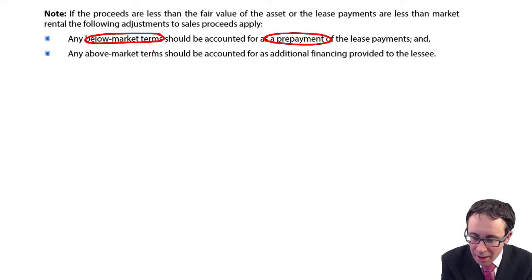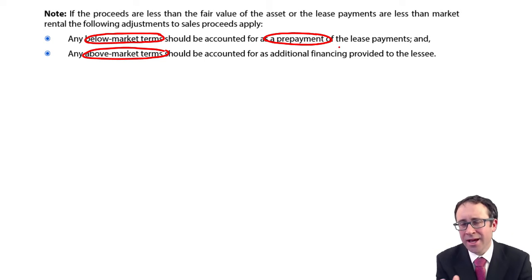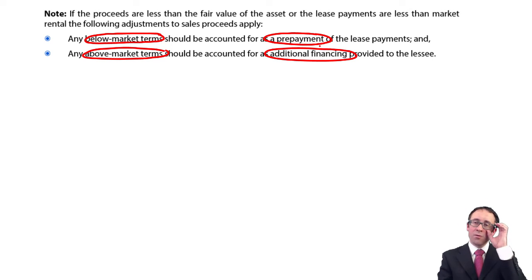If it is at above market terms, then that's saying you've got more money than what there was with regards to the fair value. So that is just additional financing. Effectively, we just add it on to the borrowings, adding on to the value of the lease liability.